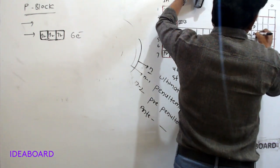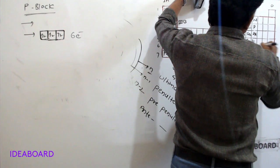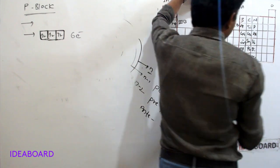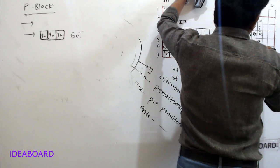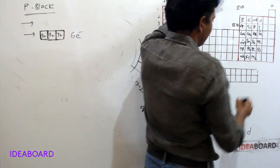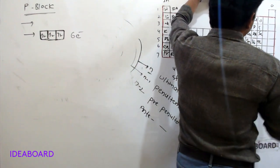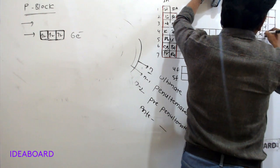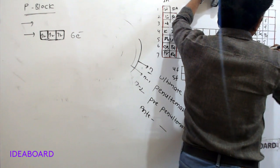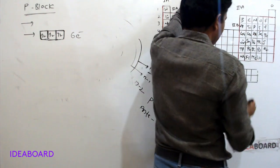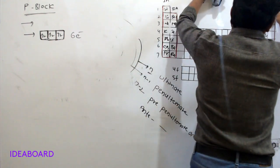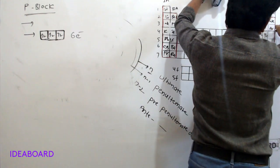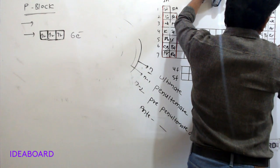Fifth A group elements are nitrogen, phosphorus, arsenic, antimony, bismuth, and moscovium. Sixth A group elements are oxygen, sulfur, selenium, tellurium, polonium, and livermorium. Seventh A group elements are fluorine, chlorine, bromine, iodine, astatine, and tennessine. Zero group elements are helium, neon, argon, krypton, xenon, radon, and oganesson.